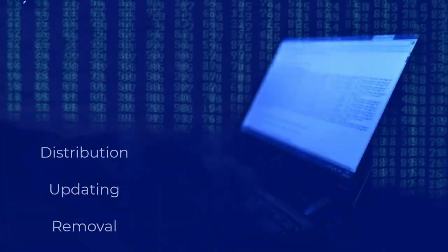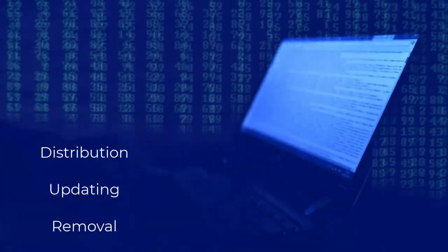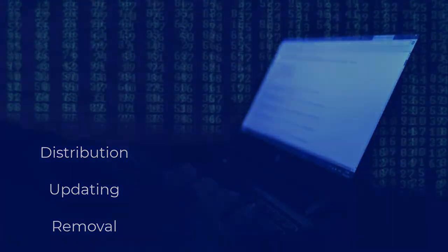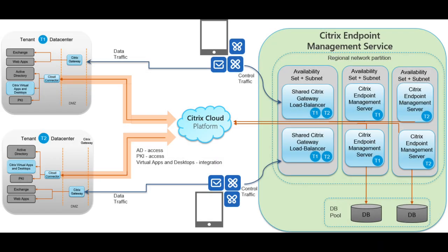Application management allows IT administrators to manage the apps installed on mobile devices, including distributing, updating, and removing apps. For example, Citrix Endpoint Management allows IT admins to deploy business-critical apps to users' devices and ensure they are always up to date. Application management also involves controlling which apps can be installed on devices, helping to prevent the installation of unauthorized or potentially harmful apps. This feature ensures that users have access to the apps they need on managed devices.